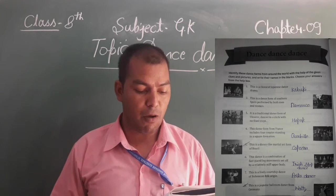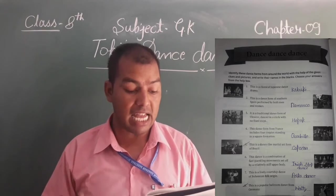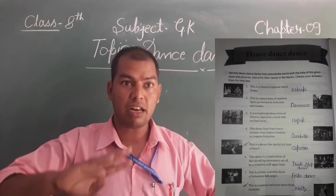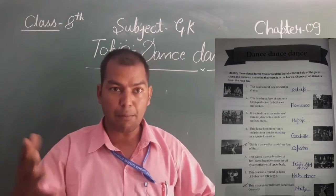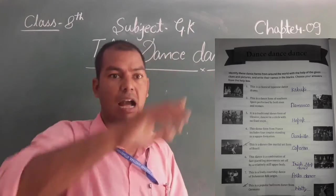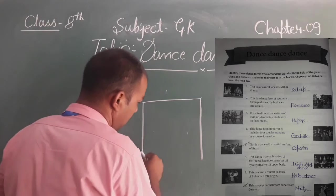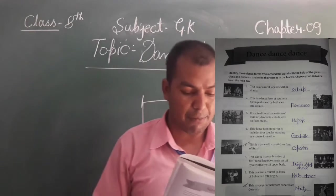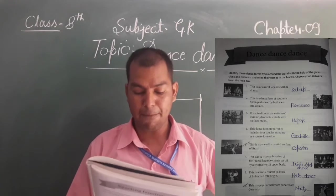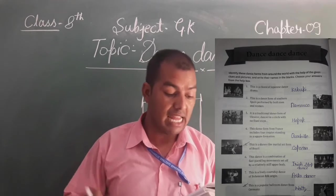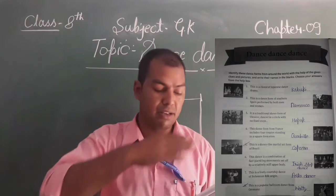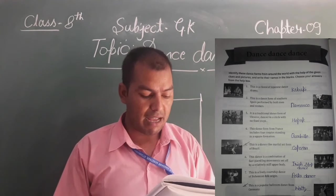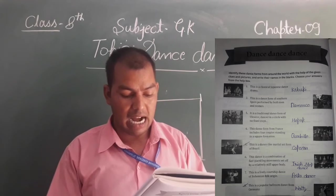Number 4: this dance form is from France. It includes four couples standing in a square format. This dance form from France includes four couples dancing in a square arrangement. This dance form is called Quadrille.